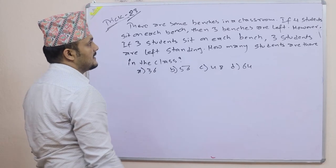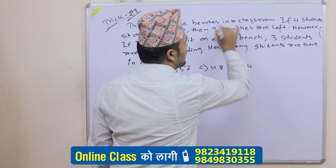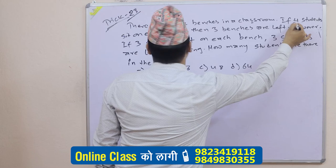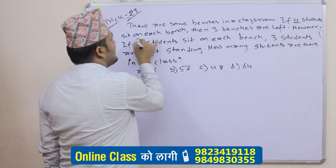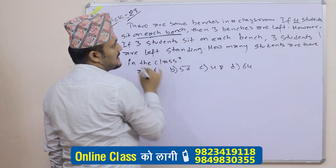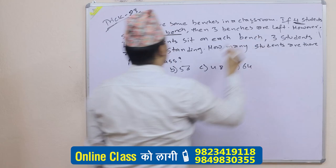There are some benches in our classroom. How many benches are in the classroom? If 4 students sit on each bench, then there are 3 benches left over.